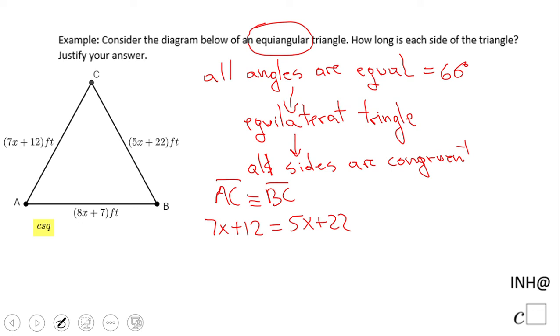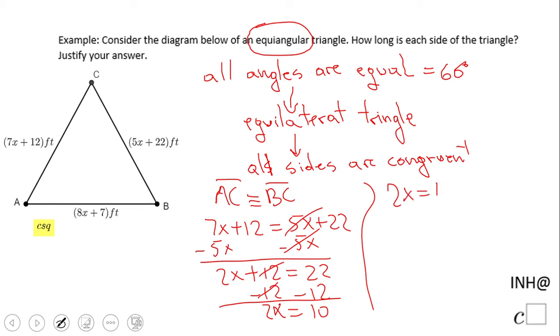Now I'm going to solve this equation. Subtract 5x and we have 2x + 12 = 22. Subtract 12 and we end up with 2x = 10.